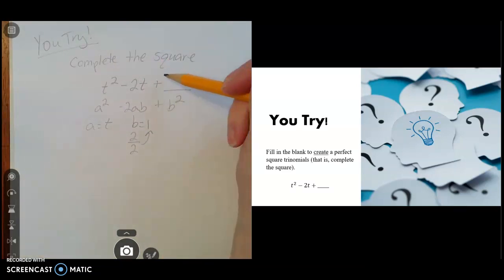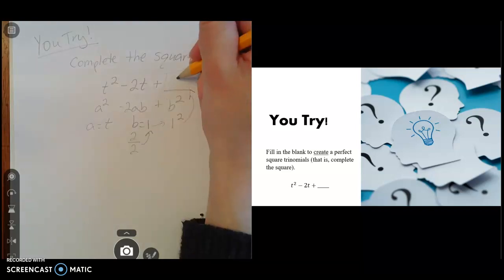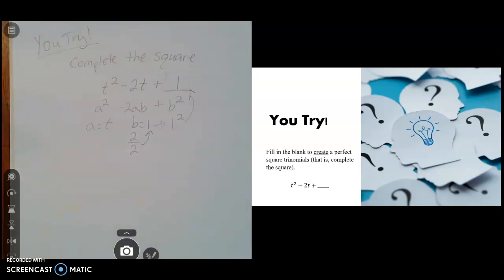So the part that we're filling in, this little blank right here, is b squared. Well, if b is 1, you're going to take that 1, and you're going to square it, and that's what goes in the blank. 1 squared is 1 times 1, which is 1. So if you add 1, that would complete the square.